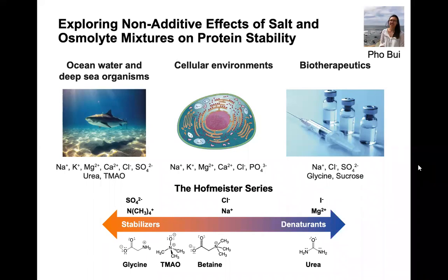The motivation of my research comes from the fact that salt and osmolytes are ubiquitous in nature. For example, there is an abundance of salt in ocean water and cellular environments. Osmolytes are accumulated inside many deep-sea organisms like sharks and fish to help them counter the osmotic stress of seawater. More importantly, during this COVID-19 pandemic, everyone is waiting for a vaccine solution, and salt and osmolytes play an important role in vaccine formulations because they help keep drugs stable and prevent aggregation.